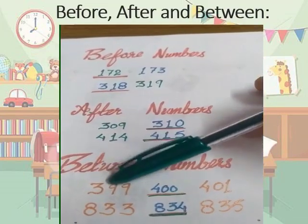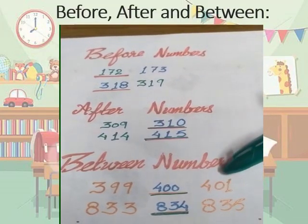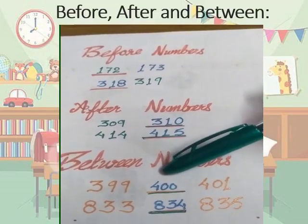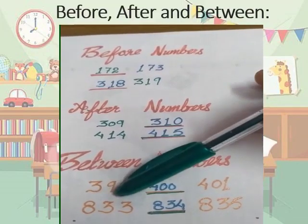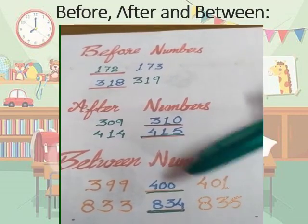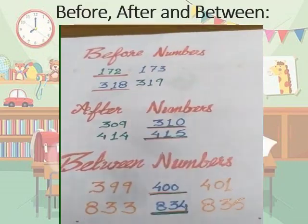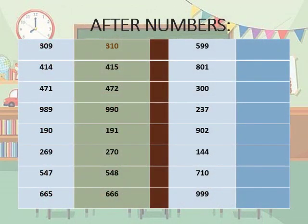For between numbers: between 399 and 401 the number comes 400. Between 833 and 835 the number comes 834. After numbers — every number is 1 more than the other, counting in the forward direction. After 309 comes 310. After 414 comes 415. And after 471 the number 472 comes.